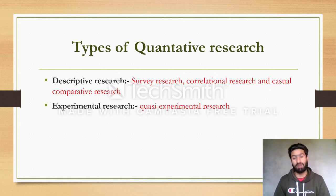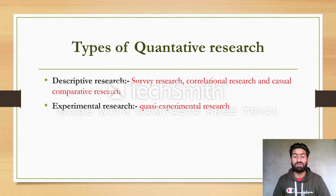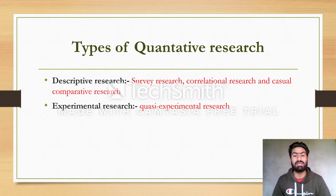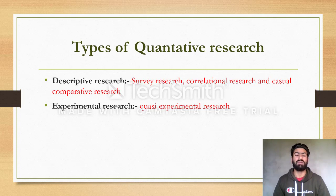Experimental research is that type of research where an investigator has complete control over the study. There are subtypes included: pre-experimental design with least control, true experimental design with complete control, and quasi-experimental research where data is not collected through randomization techniques. We can discuss these further in another video.